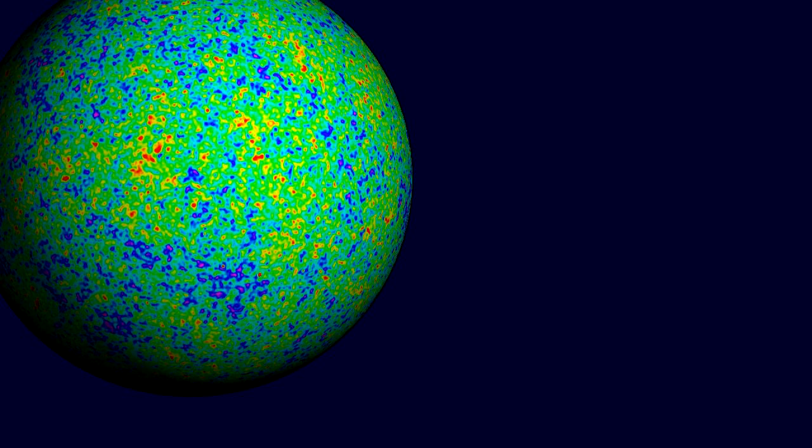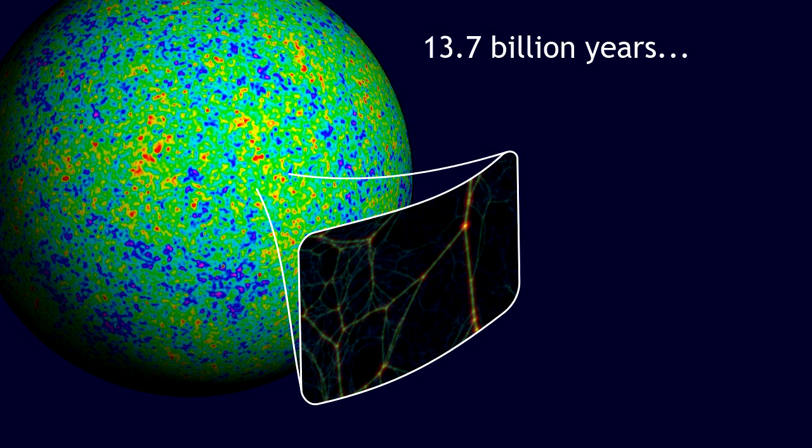We will first address the question of how the web-like structure arose out of the primordial universe. This happened over 13.7 billion years of cosmic evolution. Under the gravitational influence of the inhomogeneous mass distribution, the tiny perturbations in the primordial density field start to grow. Matter starts to migrate towards the higher density regions. Meanwhile, it evacuates the regions of lower gravitational attraction to form the low density regions.